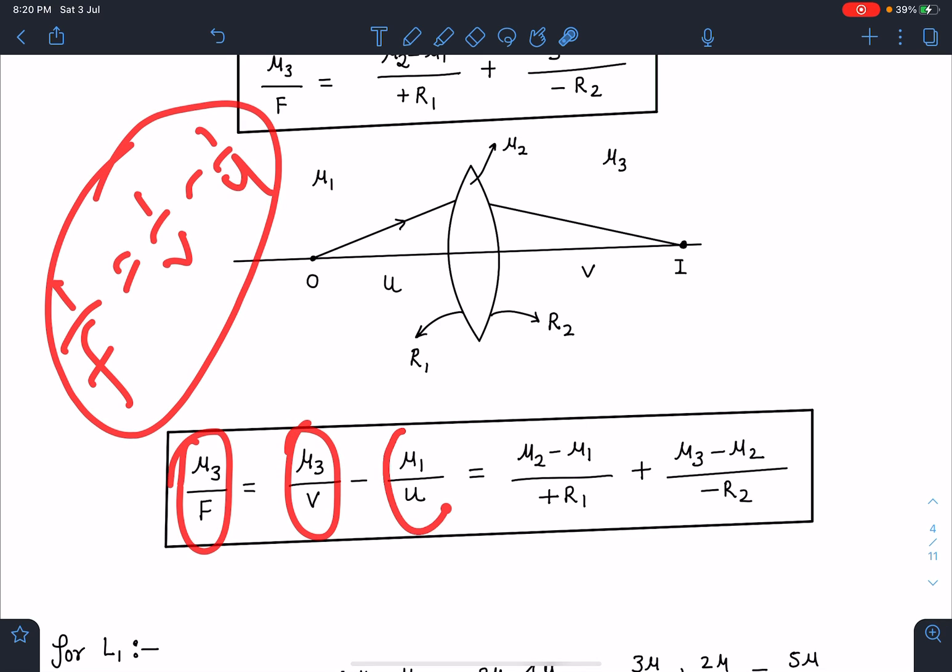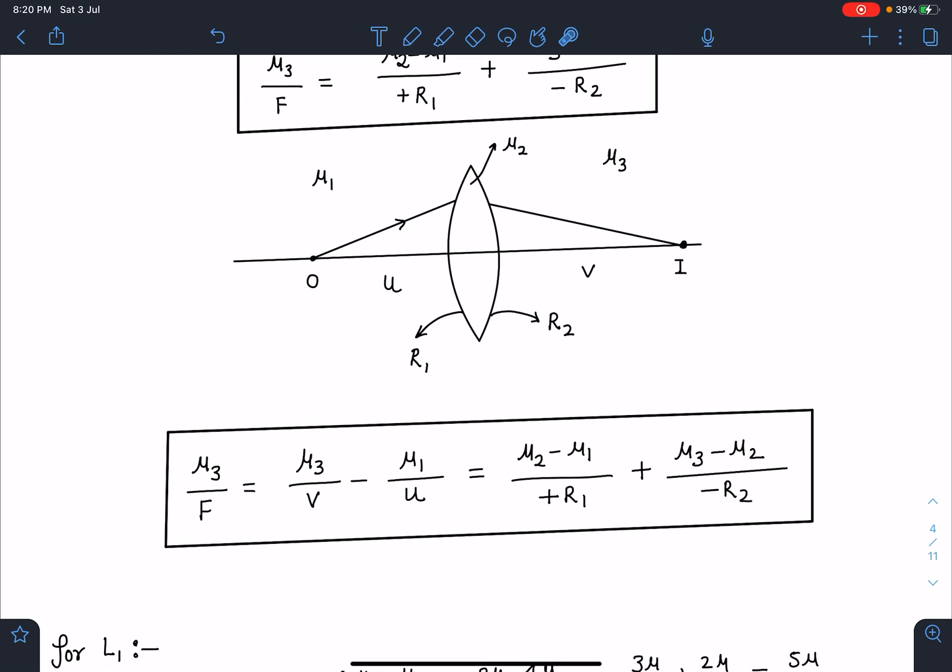You can check if first and last medium is same, μ₃ and μ₁ are equal, our equation will be reduced to 1/f = 1/v - 1/u. Just now I have calculated the value of μ₃/f which is (μ₂ - μ₁)/R₁ + (μ₃ - μ₂)/(-R₂). So I'm going to use these logics here.